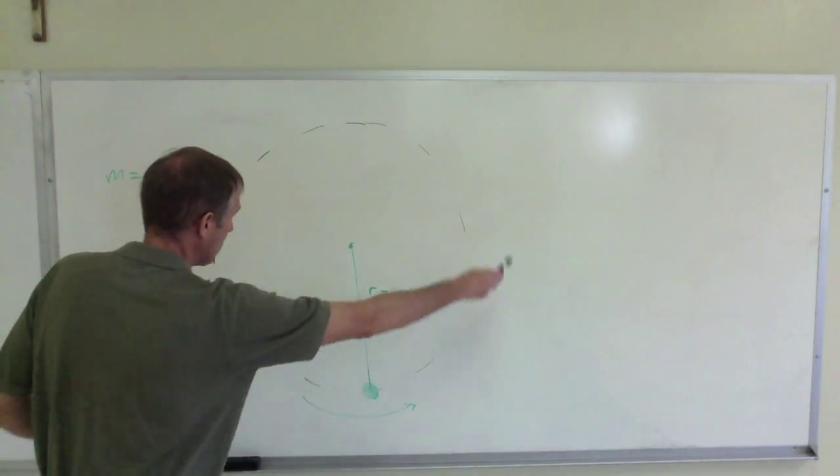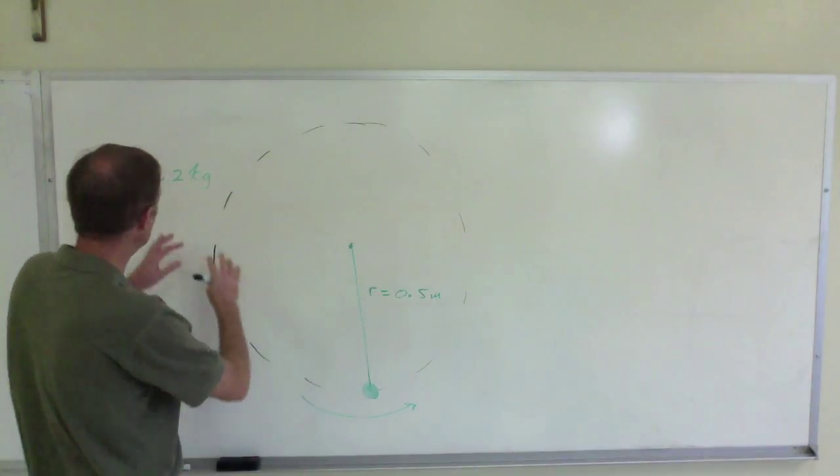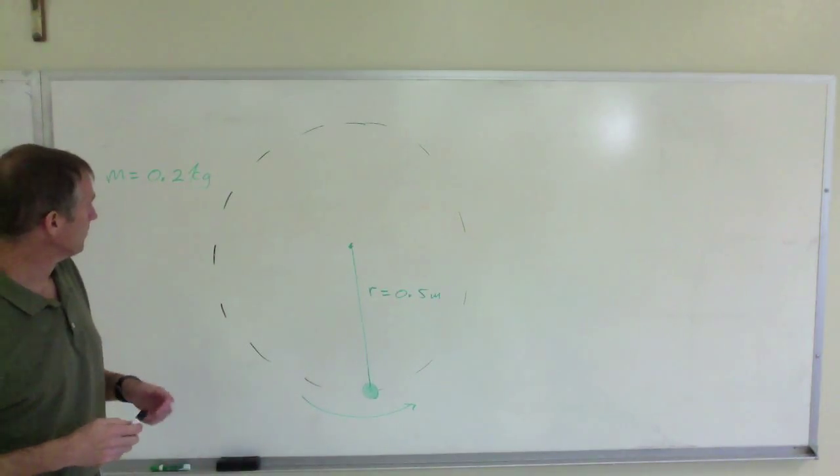Here the ball is going that way. The radius of the string is 0.5 meters. The mass of the ball is 0.2 kilograms.